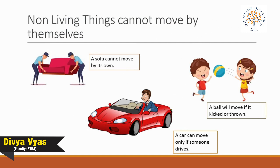Non-living things such as tables, chairs, and cupboards cannot move by themselves — they move only if you push or pull them. Cars and buses move only if someone drives them. A ball will move only if it is kicked, hit, or thrown, but it cannot move on its own.